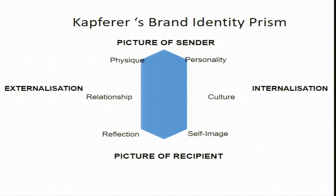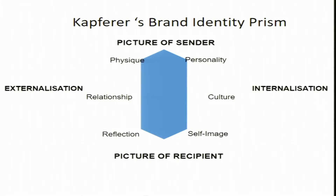All six sides have names, but there are also four more parts. At the top you see it is written 'picture of sender' and at the bottom 'picture of the recipient.' The sender is the firm, the organization, the brand manager — it is the organization which is creating a picture of the brand identity and sending that picture towards the consumer. On one side of the prism you have the picture of sender.